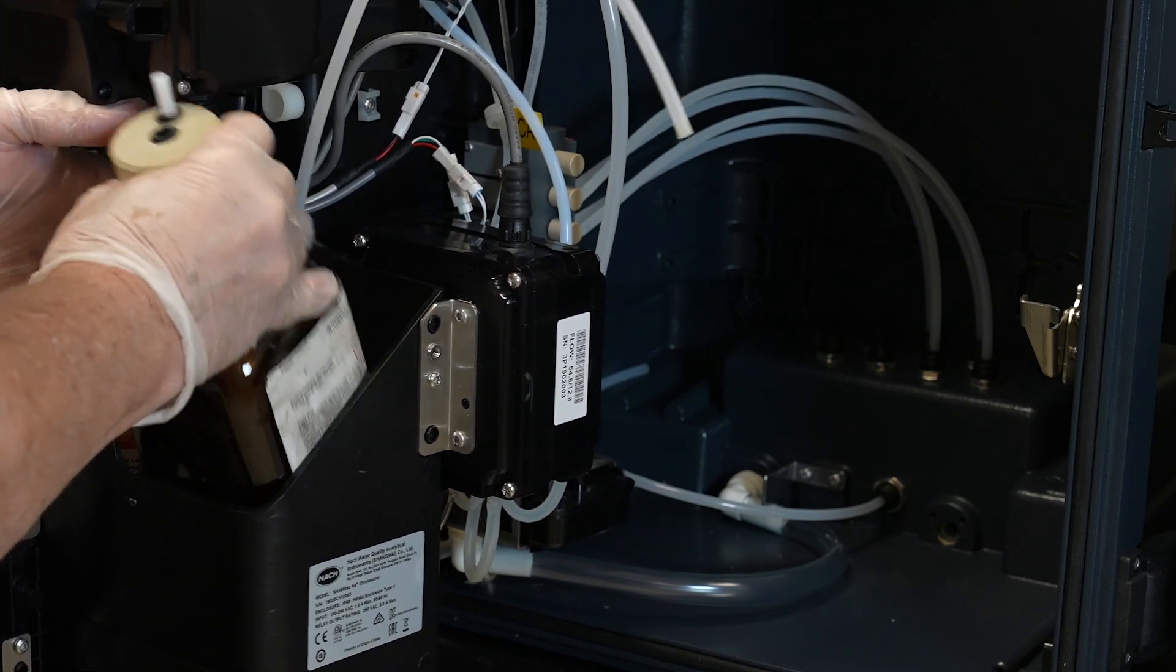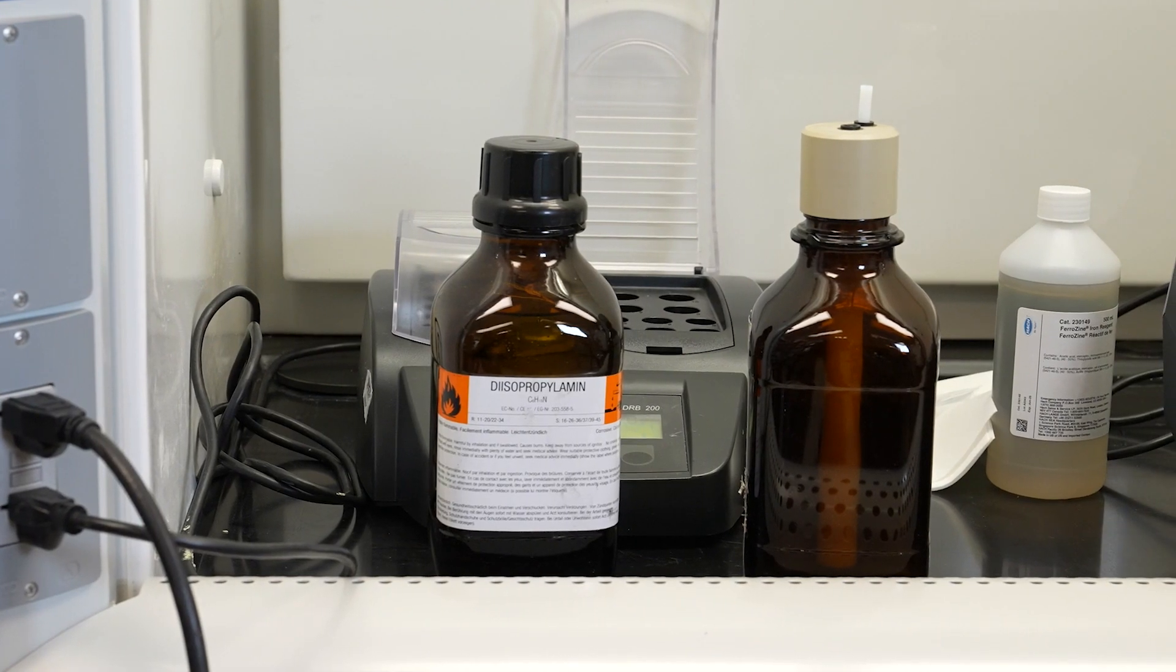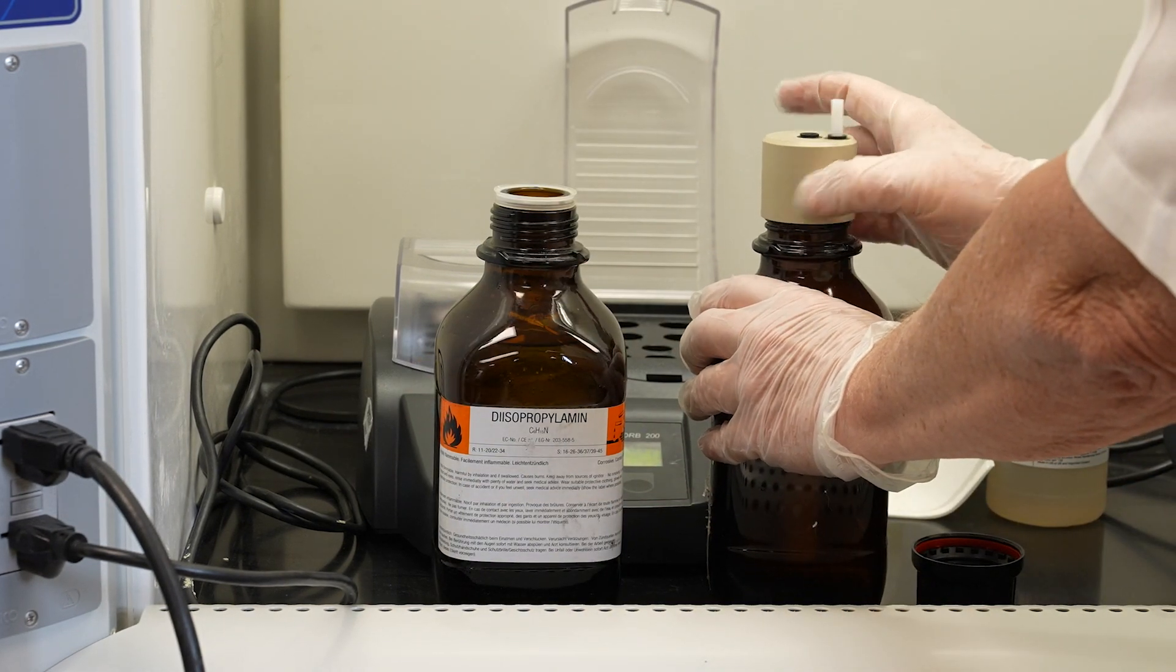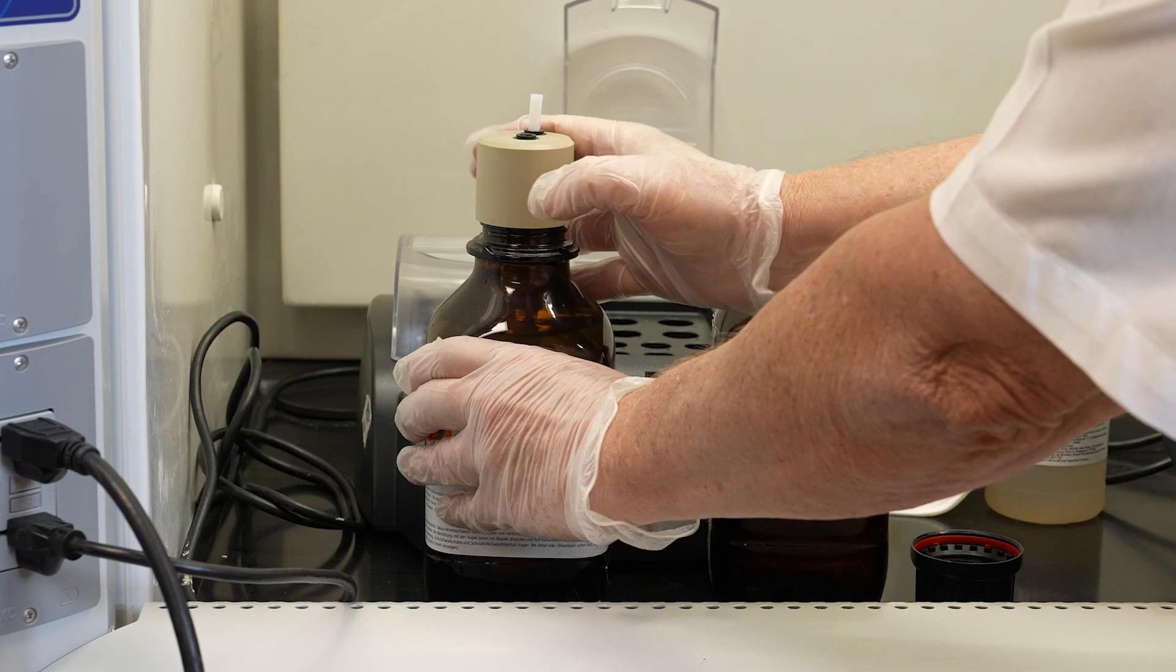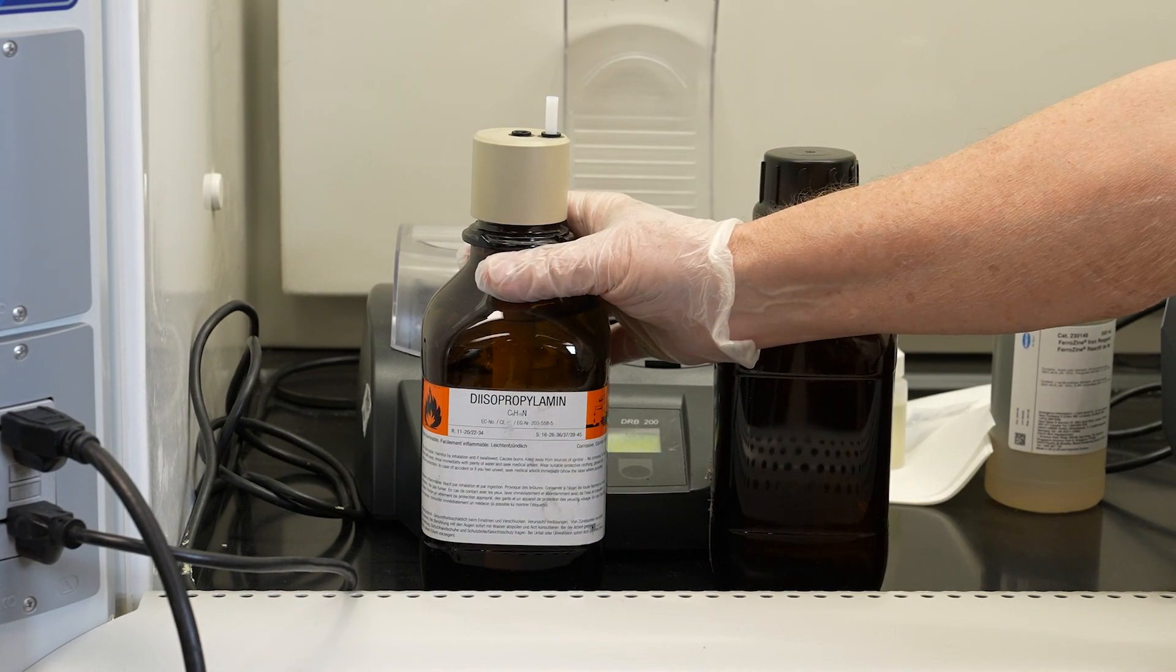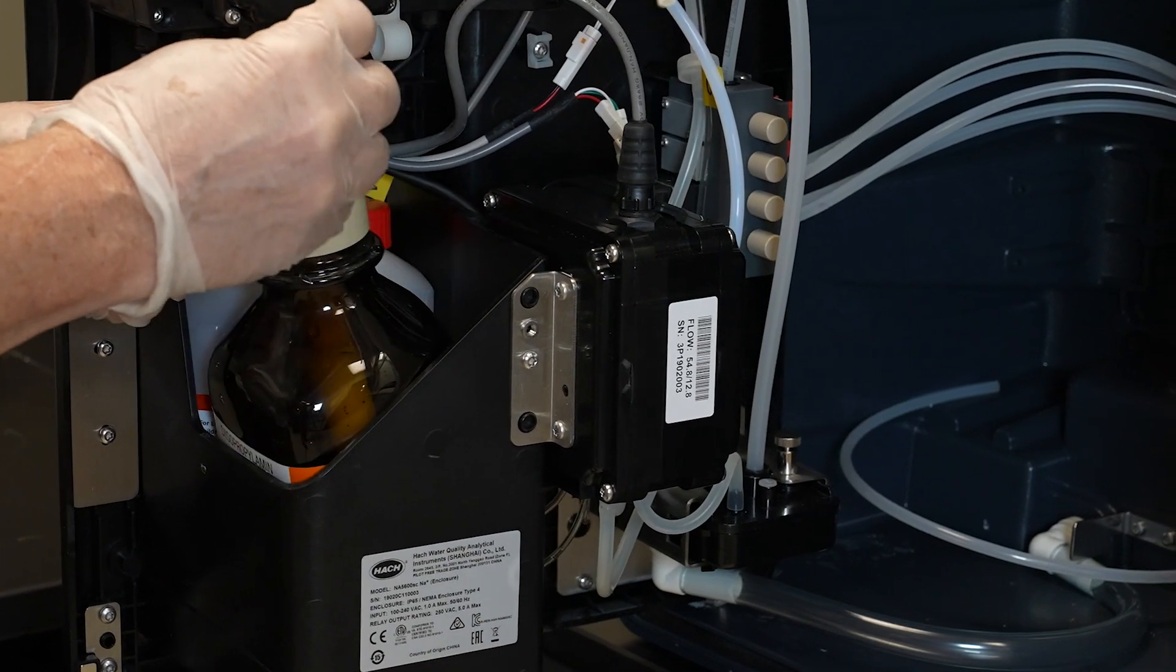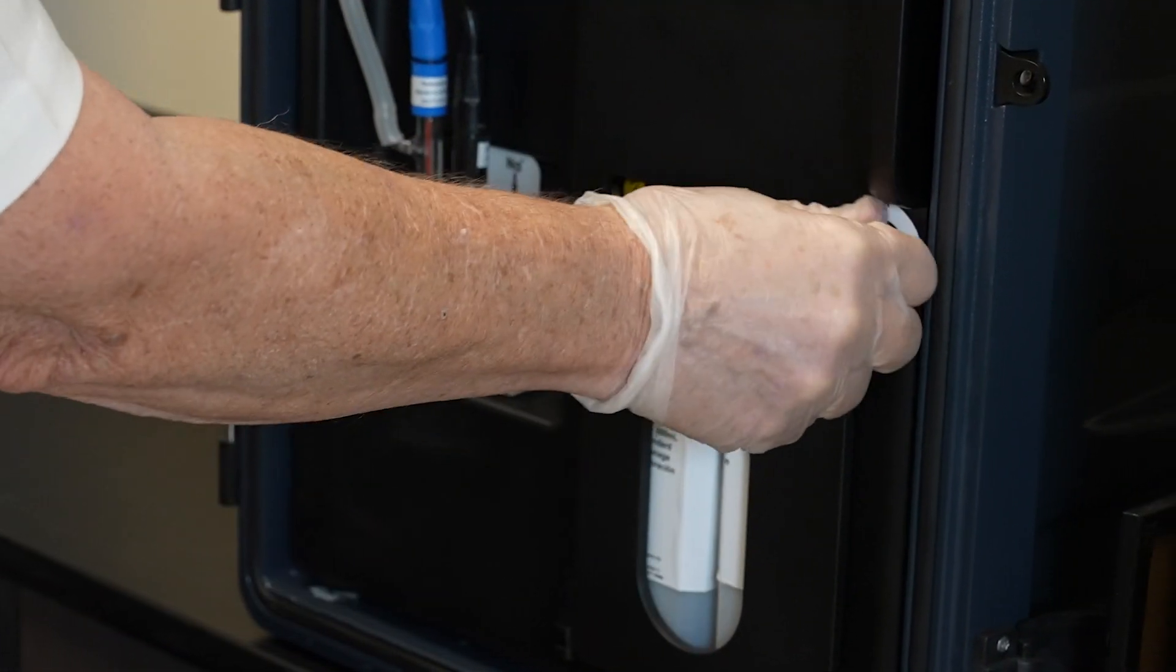Carefully remove the DIPA bottle and carry it over to the hood where your replacement bottle is at. Making sure your hood is on, that we're making sure we're not getting any vapors. The next thing we want to do is remove the lid from the new bottle. Quickly remove the wick from the replacement bottle. Place it on the new bottle. Take your initial lid onto the old bottle. And now this is ready to transfer back to your analyzer. Carefully place the new DIPA bottle in and then reconnect your tubing. Close your door.